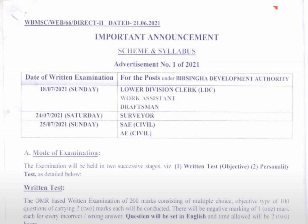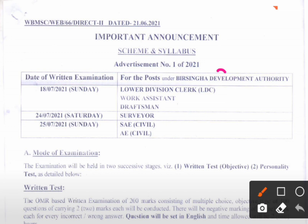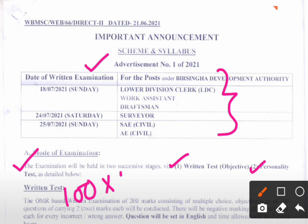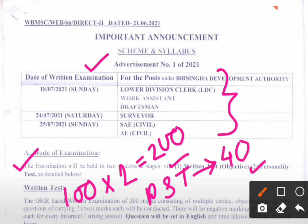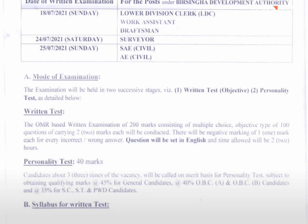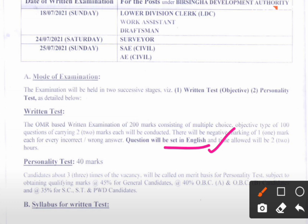What will be the mode of examination for these posts under Virsingo Development Authority advertisement number 01/2021? The mode of examination will be in two stages or two tiers — there will be a written test and a personality test. The written test has 100 questions, each question allotted two marks, that means 200 marks for the written examination. The personality test will be conducted for 40 marks. So the total number of marks is 240 for each and every post. The examination will be OMR-based.